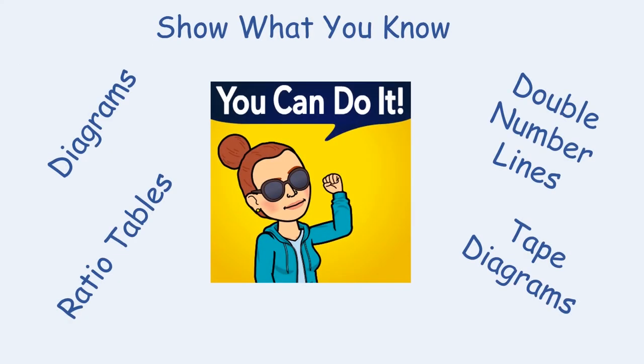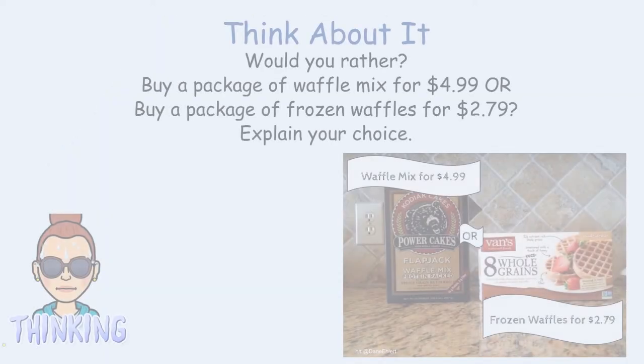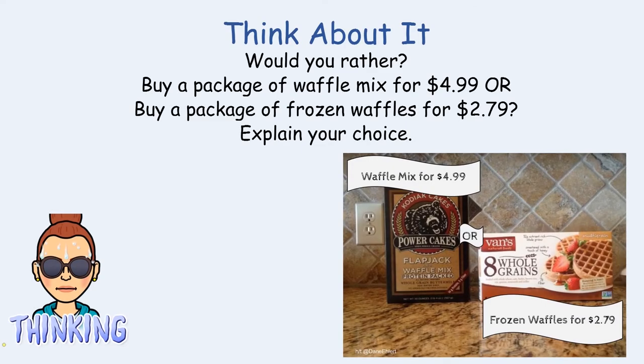We just reviewed a lot of information about methods to solve ratio and rate problems — diagrams, ratio tables, double number lines, and tape diagrams. Now it's your turn to show what you know. For our second 'think about it' this week, we're talking about food. Would you rather buy a package of waffle mix for $4.99 or a package of frozen waffles for $2.79? Think about which one you would select and why.